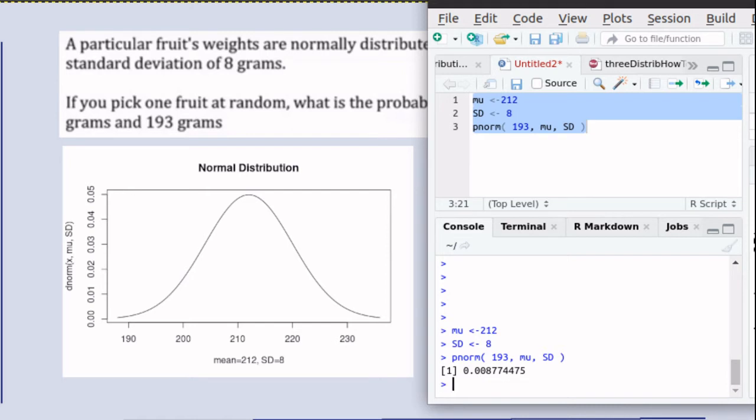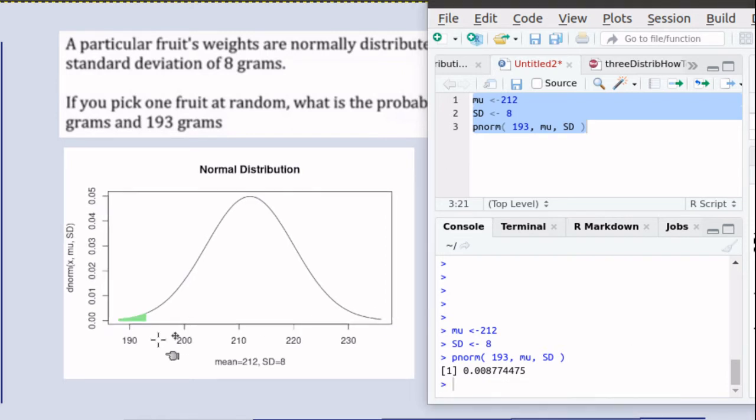Let's look at a picture of the probability. There's where 193 is, and the probability of getting a value of 193 or less is that little green area. Of course that green area goes on forever out there in the tail, and that area is that amount.